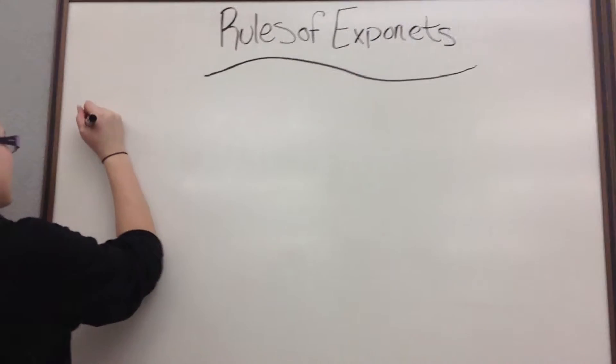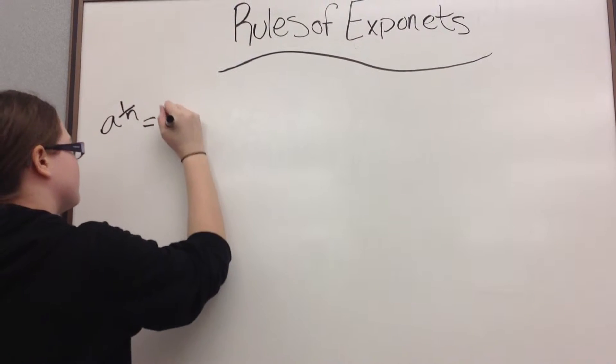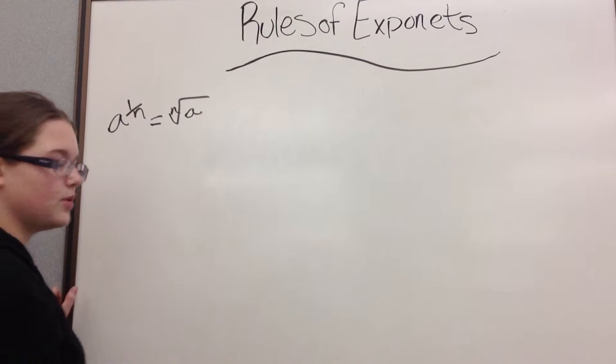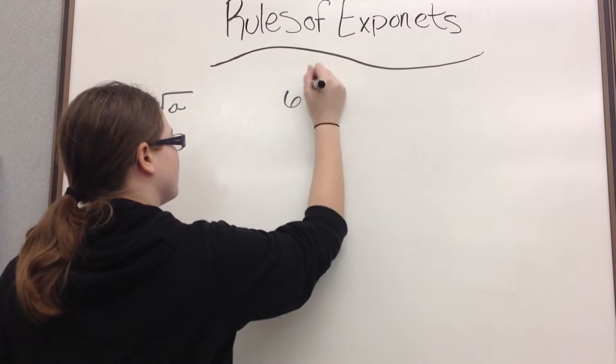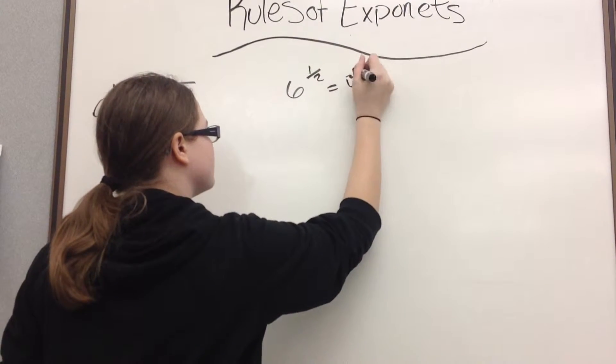So you have a to the 1 over n is equal to the n root of a. So for example, if you have 6 to the 1 over 2, it is the square root of 6.